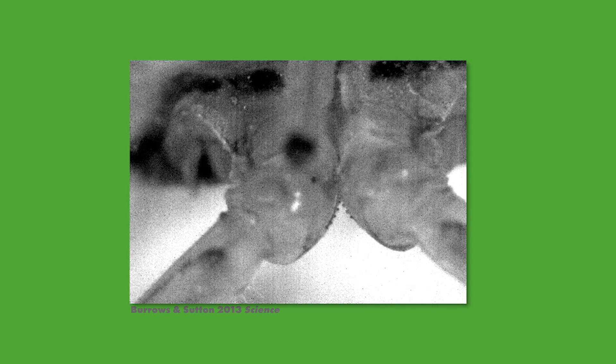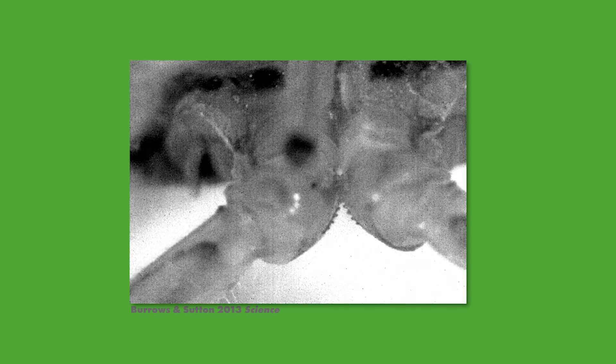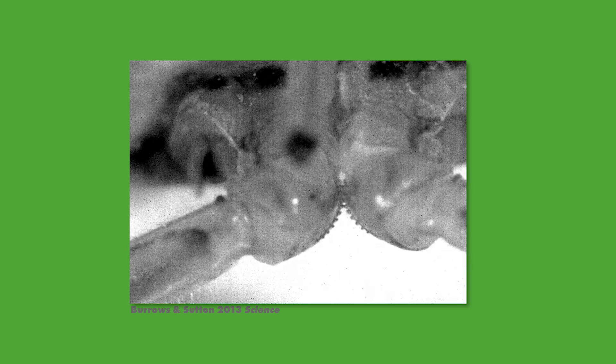One way some planthoppers have solved this out-of-sync leg problem is by actually using gears. In a 2013 paper, Burrows described the planthopper nymph as the only animal we know of that has functional moving gears. At the base of their legs on the rapidly rotating trochanters, a series of interlacing teeth keep leg rotations in sync. Strangely, the gears are lost when the planthoppers reach the final adult stage and they switch to relying on a different method.